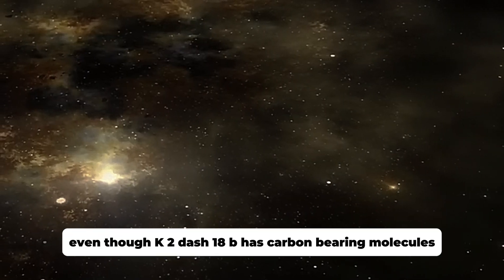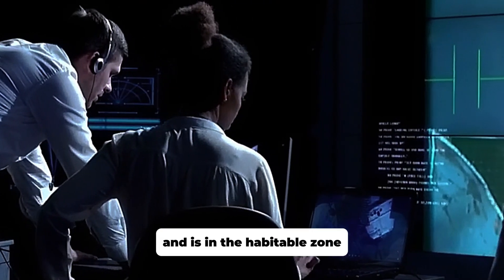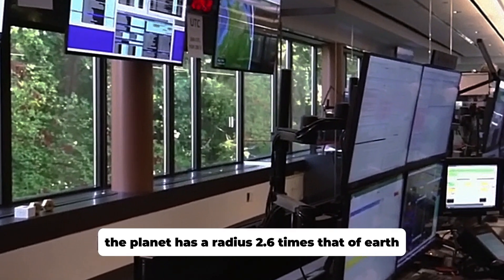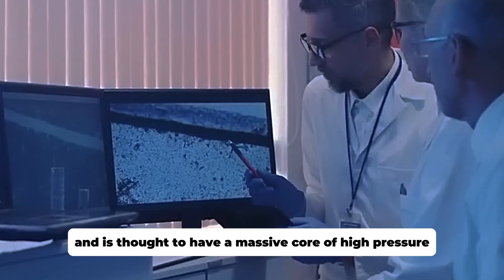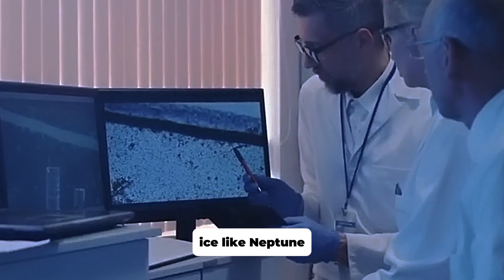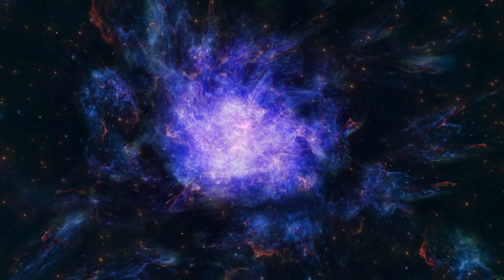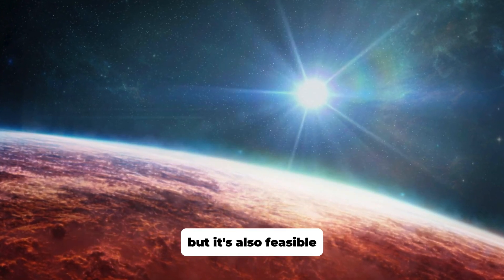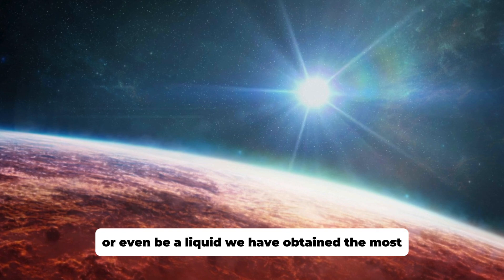Even though K2-18b has carbon-bearing molecules and is in the habitable zone, it doesn't mean the planet can support life. The planet has a radius 2.6 times that of Earth and is thought to have a massive core of high-pressure ice like Neptune, but with a thinner atmosphere rich with hydrogen and an ocean surface. For Hycean worlds, vast bodies of water are anticipated, but it's also feasible that the water is too hot to sustain life or even be a liquid.